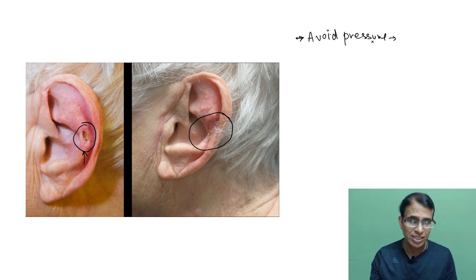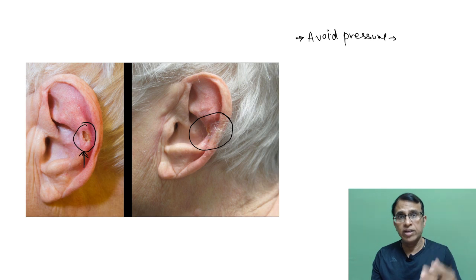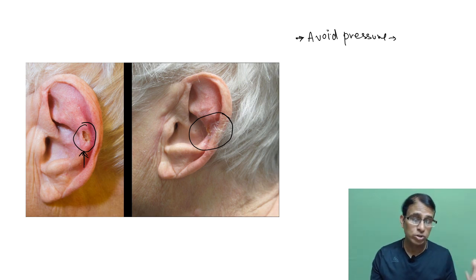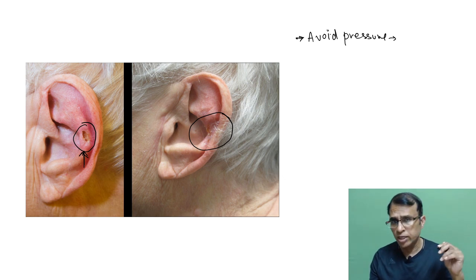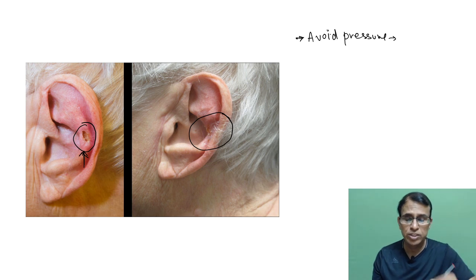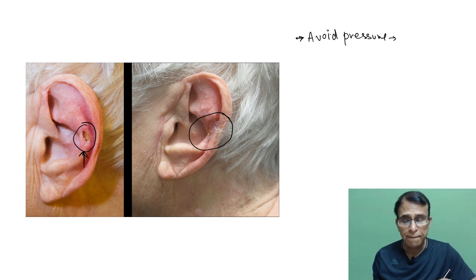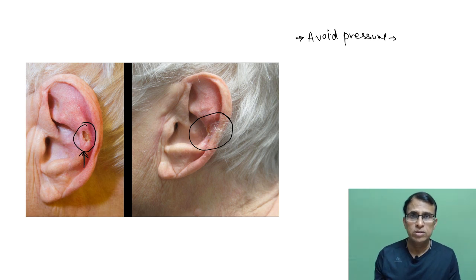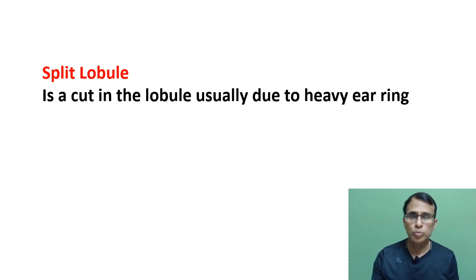When the skin is breached and cartilage is exposed, there is a high chance of infection. You have to take all precautions — apply bandage, clean regularly, and give antibiotics — until healing occurs, though it may not heal completely. That is chondrodermatitis nodularis chronica helicis. Next is split lobule — the lobule has a split, usually due to heavy rings that dangle and cut through the lobule.